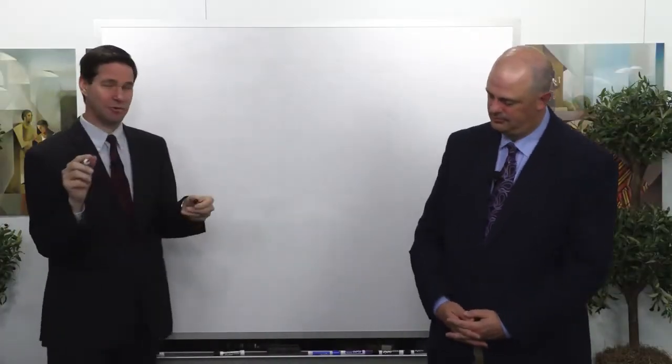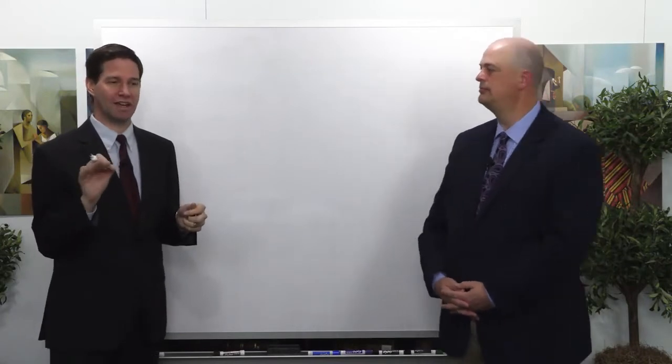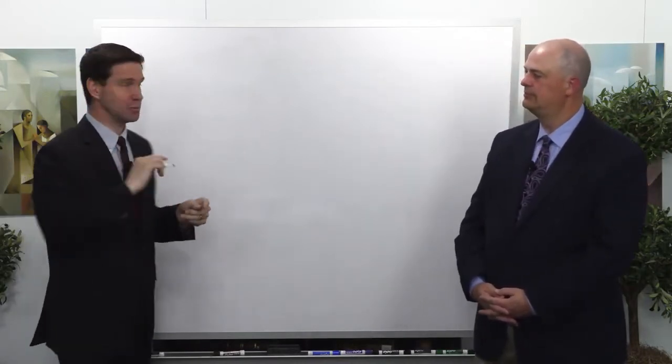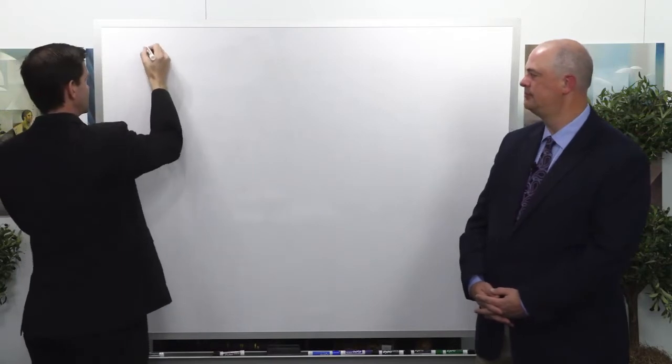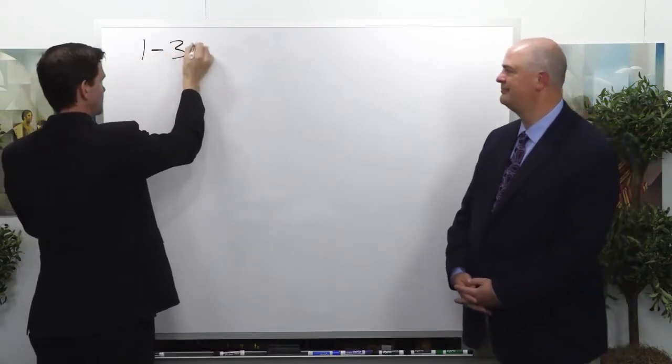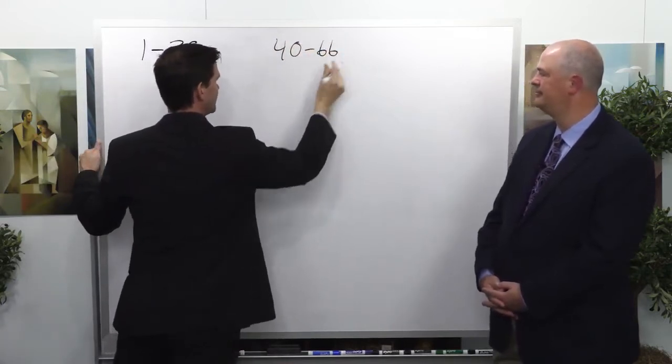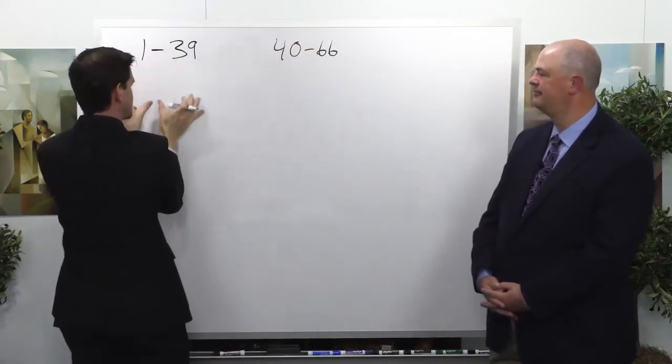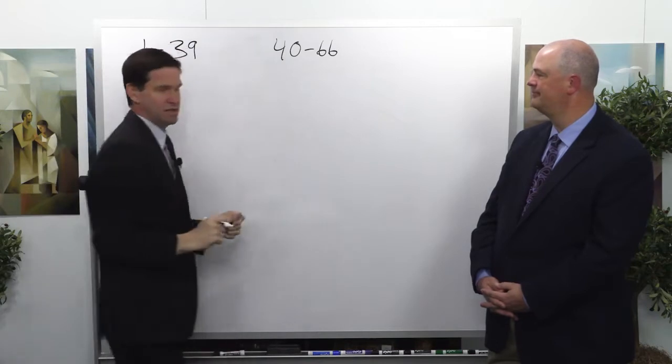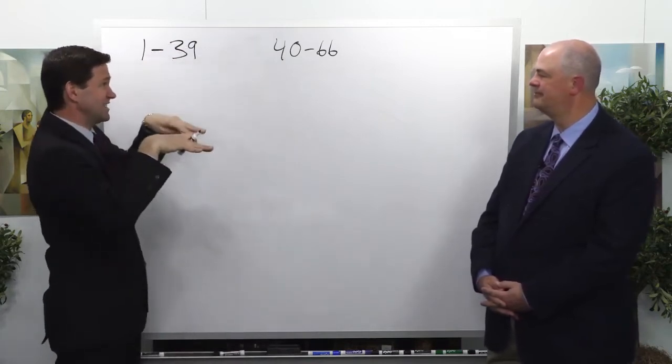It might be helpful if you just saw a quick 30,000-foot overview of the entire book, because what happens is you get chapters 1 through 39, and then you get 40 through 66. These could be parsed out into smaller divisions as well, but this is the highest level look.